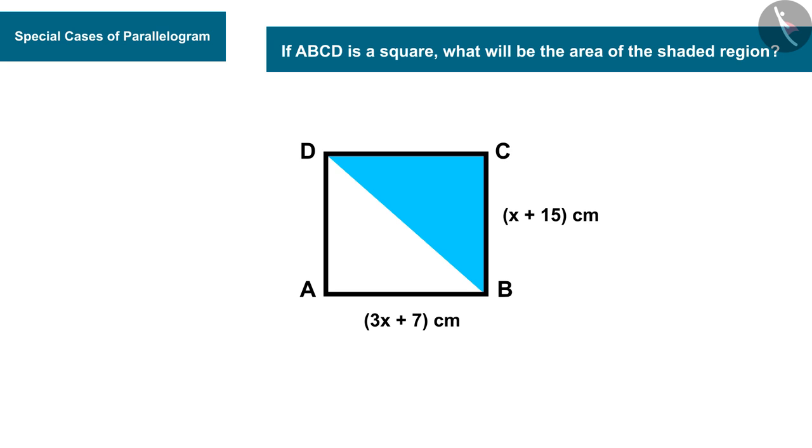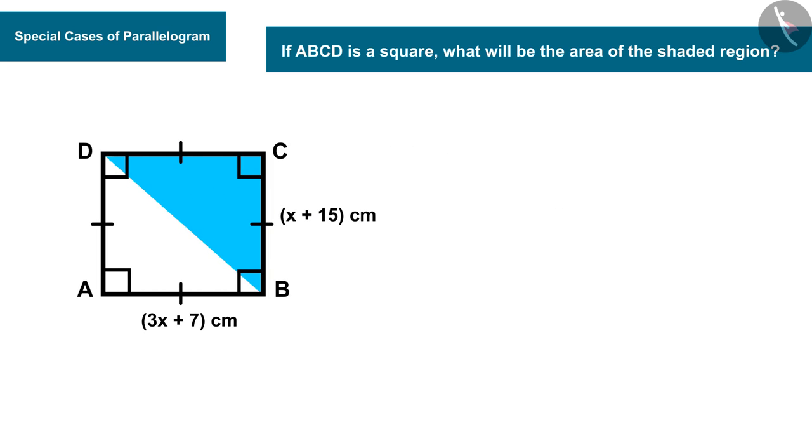We are given that it is a square, and we know that the sides of the square are of equal measure and all the angles are right angles. So we can say that the sides AB and BC are of equal measure.